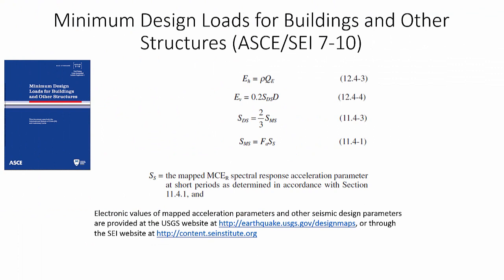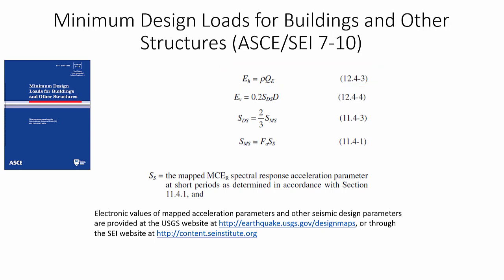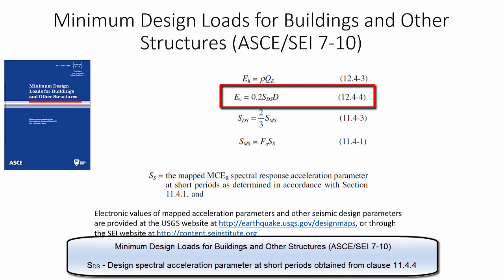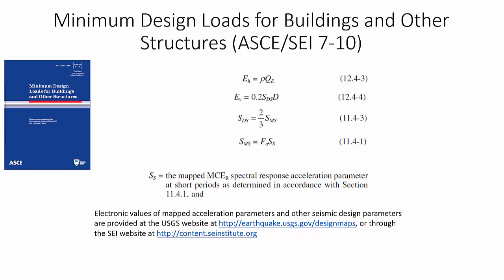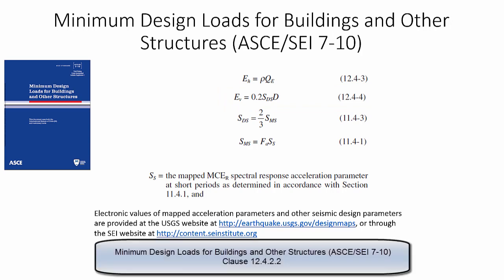The horizontal seismic load effect is determined by ASCE 7 equations, where the redundancy factor rho is multiplied by the total design lateral force or shear at the base resulting from horizontal forces applied simultaneously in two orthogonal directions. The vertical seismic load effect EV is determined by another equation where SDS is the design spectral response acceleration parameter at short periods and D is the effect of dead load. In some cases, EV may be taken as zero, as described in the relevant ASCE 7 section.